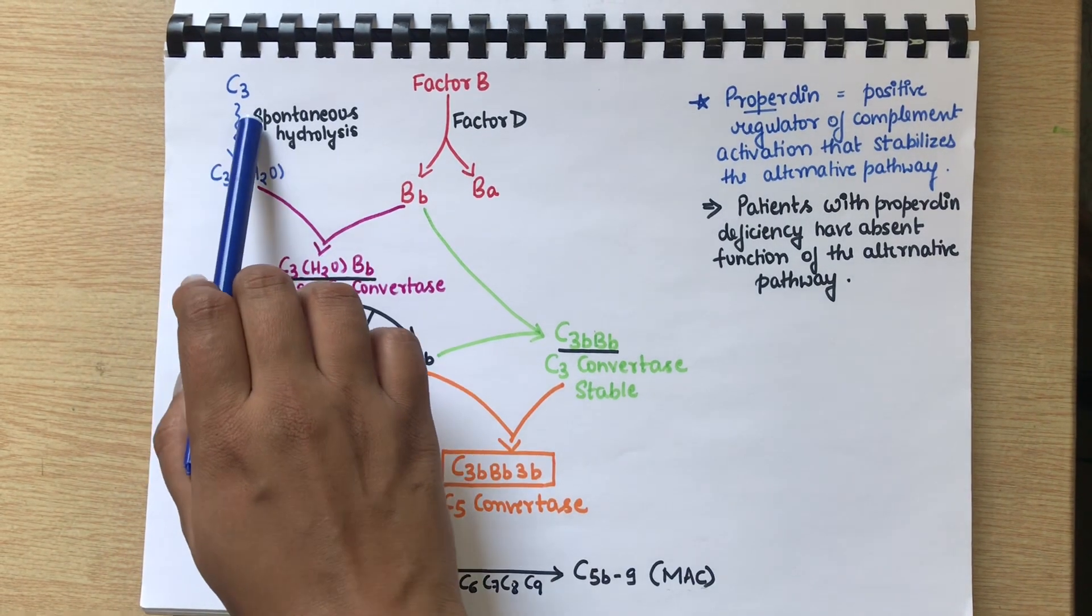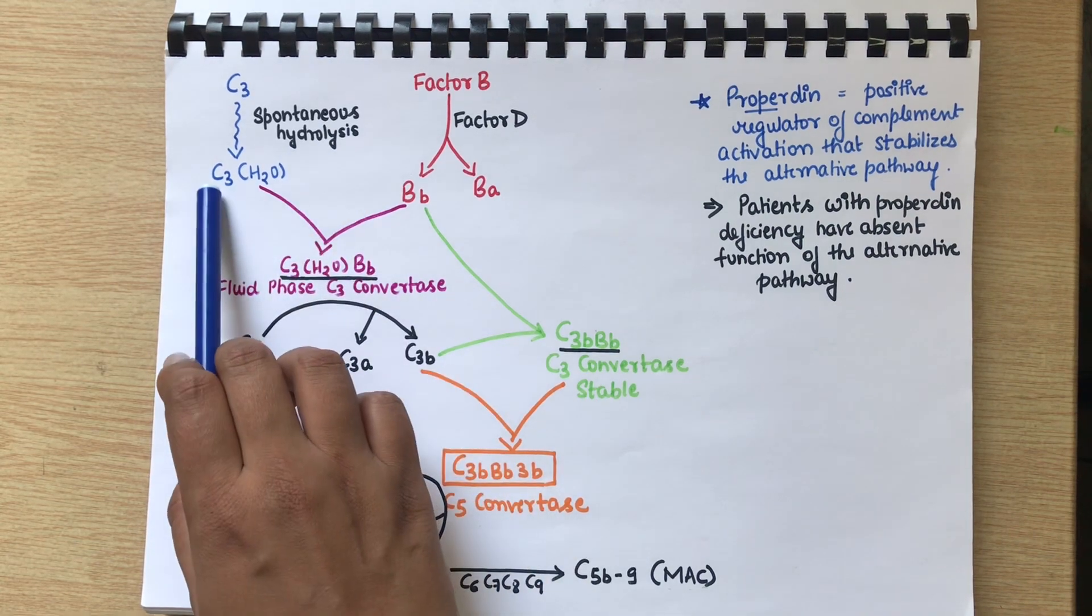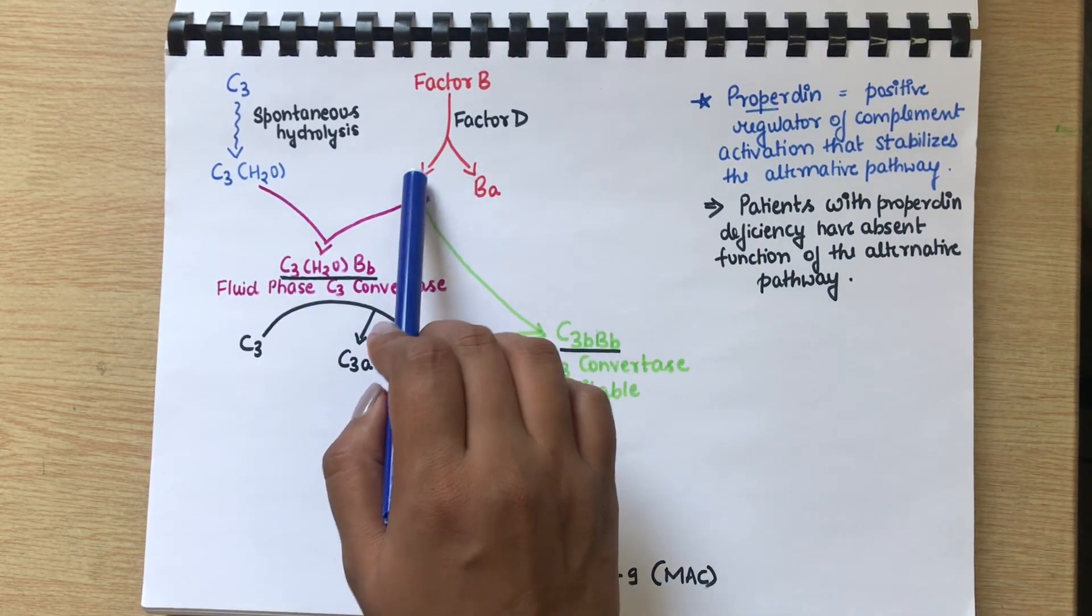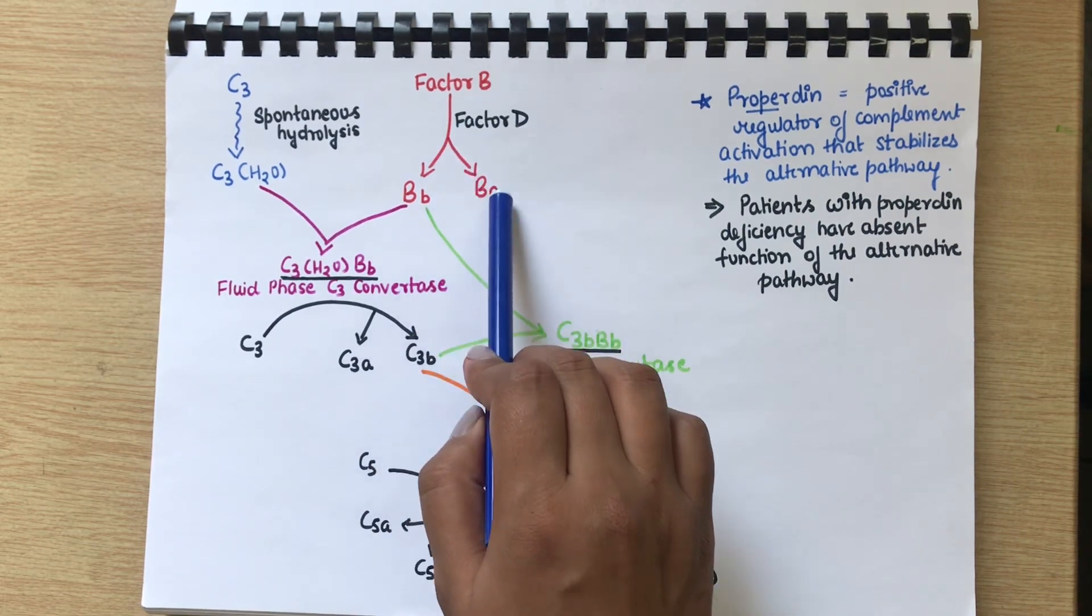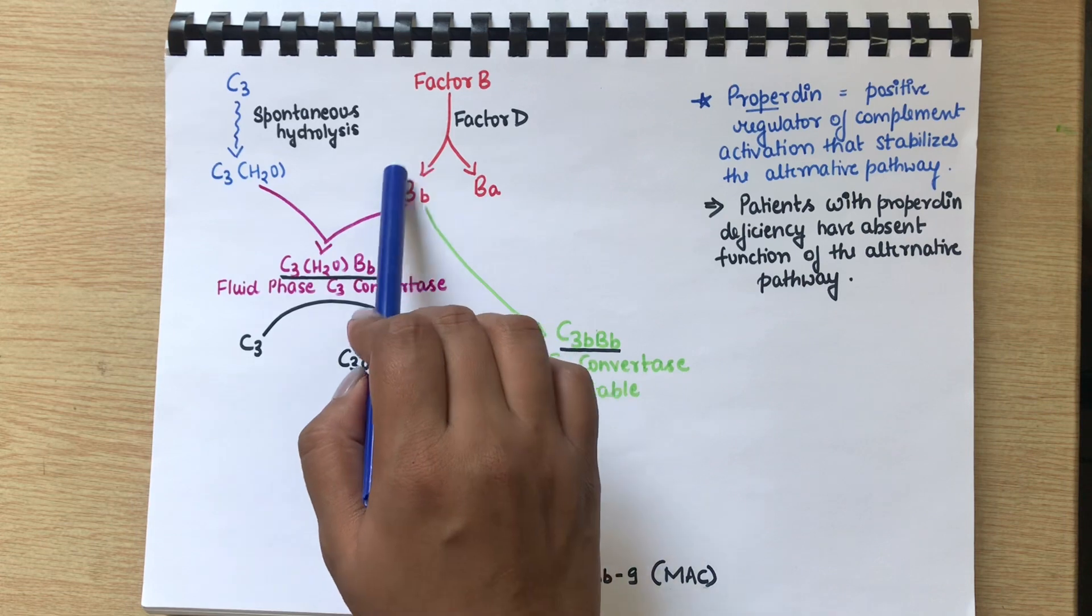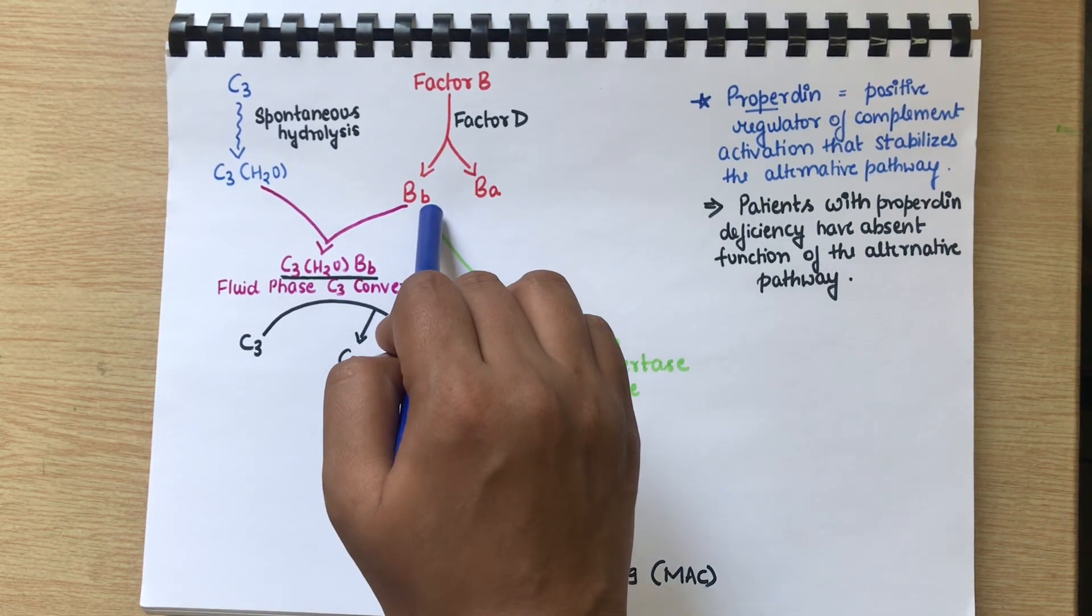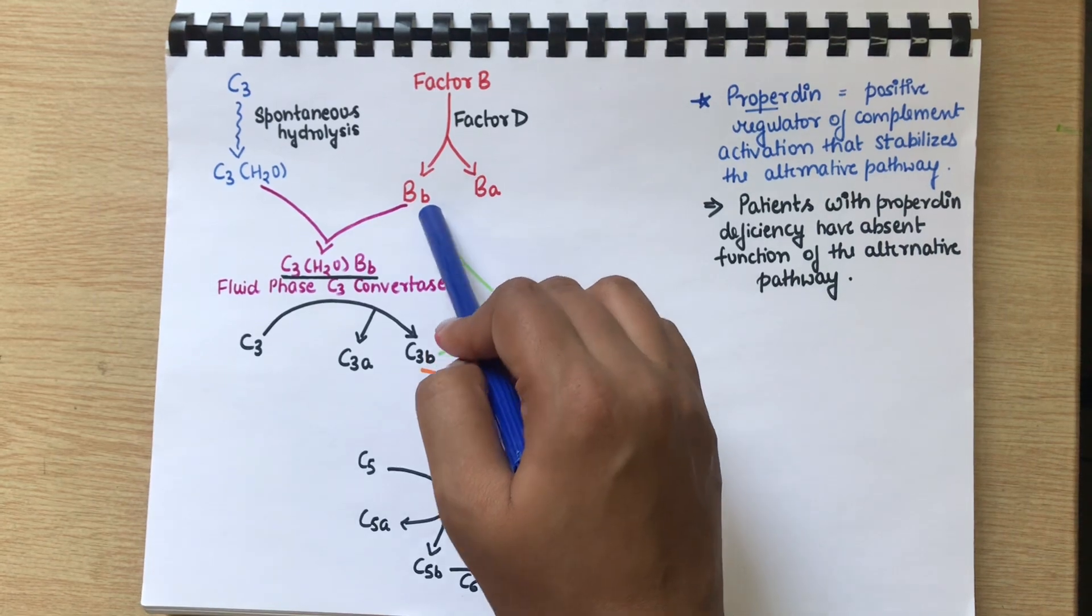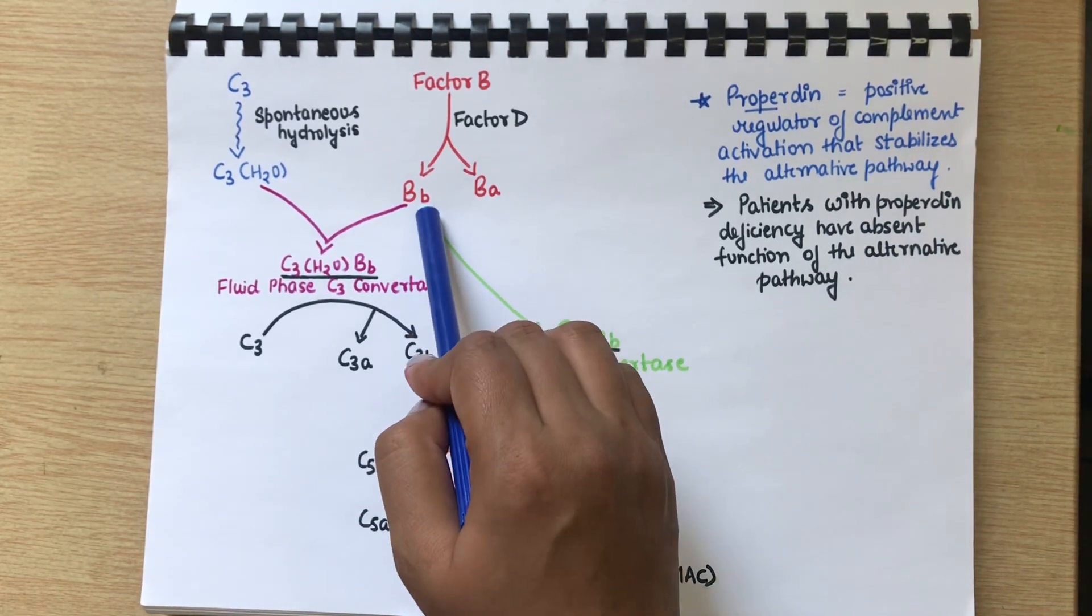C3 will be spontaneously hydrolyzed and it will form C3H2O. Factor B will be cleaved in presence of Factor D into Ba and Bb. This hydrolyzed C3 and the Bb part, which is the activated form, as I told you in the previous video, except for C2 complement protein, always the B part is larger and active and A part is smaller and inactive.